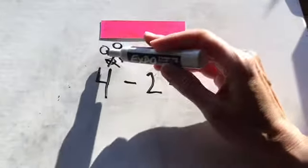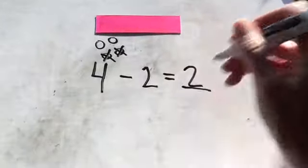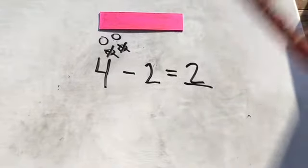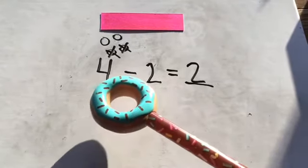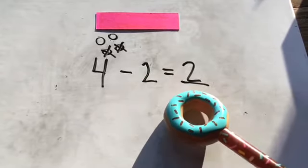And how many are left? Two. Okay, read the number sentence with me. Ready? Four minus two equals two.